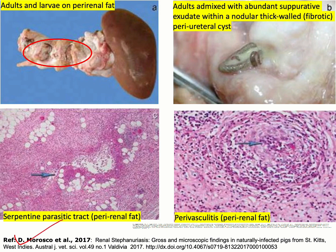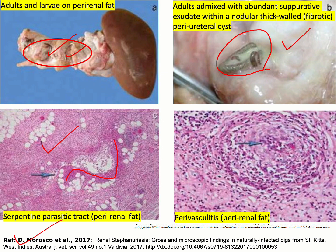In another image you can see larval stages and adult parasites on the perirenal fat. A second picture shows the cyst, which is suppurative in nature, with adult parasites located inside the cyst. A histological section shows a serpentine lesion occurring due to the immune reaction around the dead larva. A fourth picture shows perivascularitis. All these gross and microscopic lesions are related to renal stefanuriasis or Stefanurus dentatus infection in pigs.